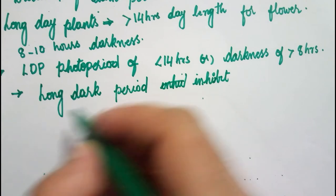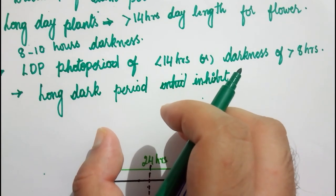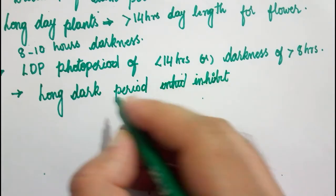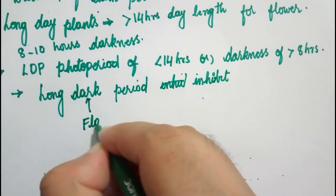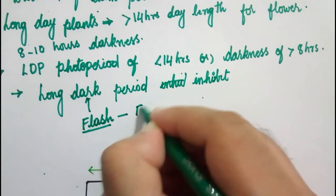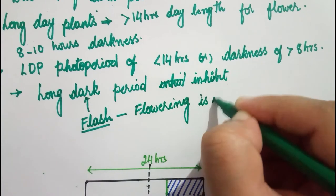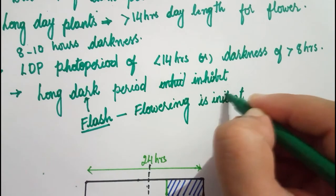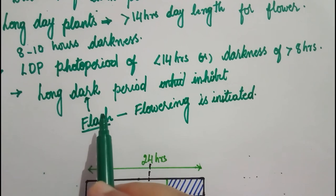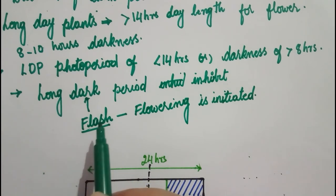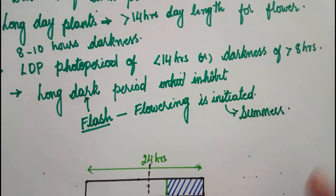However, when the long dark period is interrupted by a brief flash of light, then flowering is initiated in those long day plants. So a flash of light given during a long duration of darkness initiates flowering. Long day plants are usually summer flowering plants because in summers the days are long.